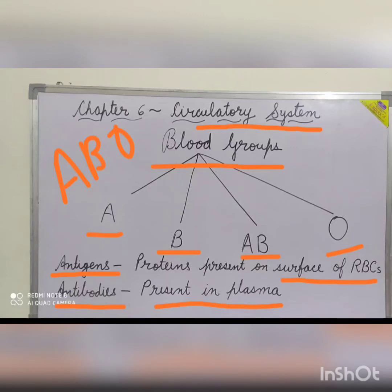This classification, as we have already discussed, is based on the presence and absence of antigens and antibodies and the RH factor. In 1940, Karl Landsteiner and Alexander Wiener discovered another important factor of blood called the RH factor.